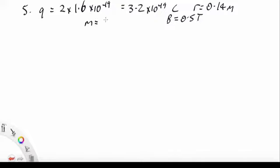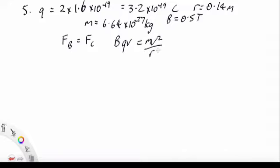Now, the mass is 6.64 by 10 to the minus 27 kilos. So if it's going in a circle, then the magnetic force is providing the centripetal force. So we have BQV equals M V squared over R.